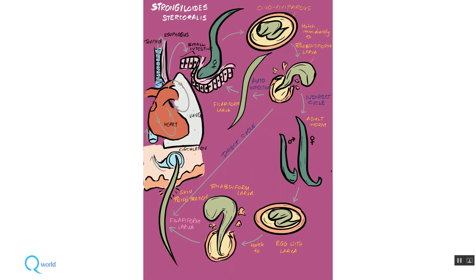To understand the life cycle better using a diagram: the filariform larvae penetrate the skin, enter venous circulation, travel to the right side of the heart, then into the pulmonary capillaries, and into the lung alveoli. From the trachea, bronchi, and larynx, crossing the epiglottis, they go back to the esophagus, are swallowed, and reach the small intestine.